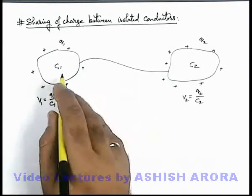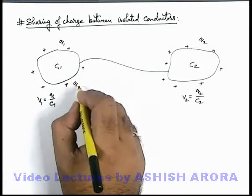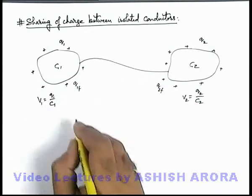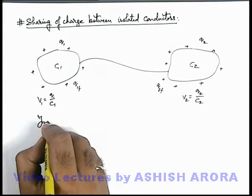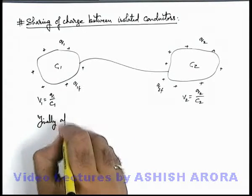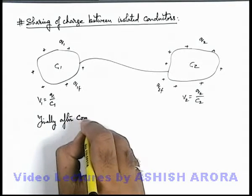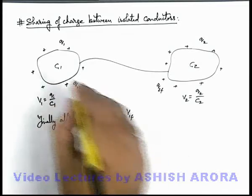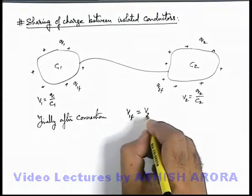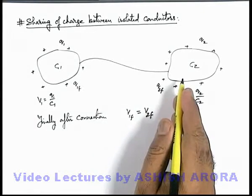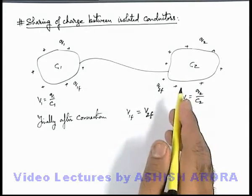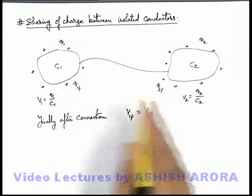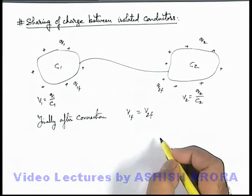So we can say after charge sharing, the final charges on these conductors are q1f and q2f. We can write finally, after connection, the final potential of first conductor must be equal to final potential of the second conductor, because we already studied when two conductors at different potentials are connected, charge sharing takes place between the two till their potential becomes equal.